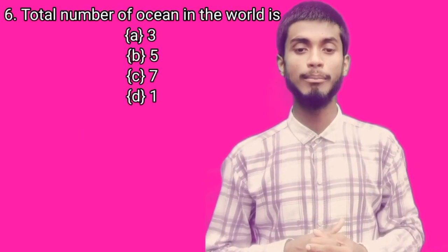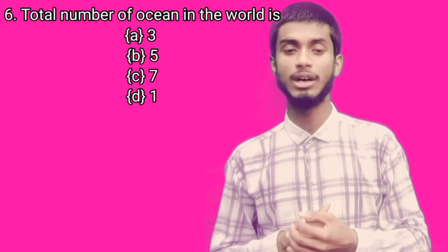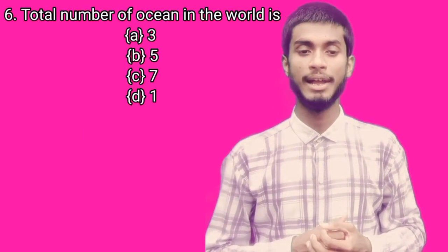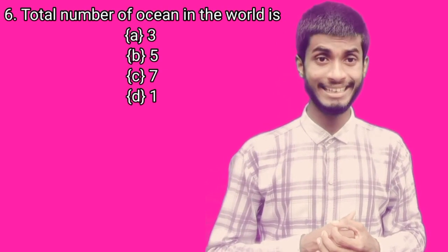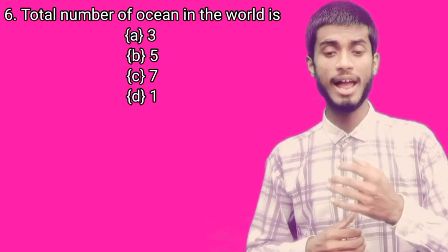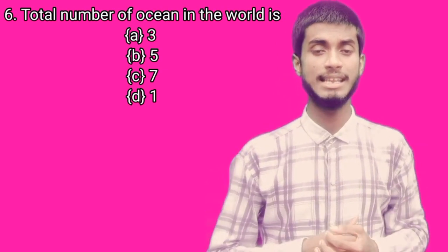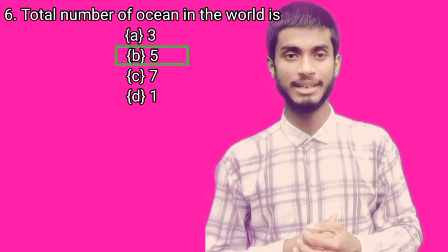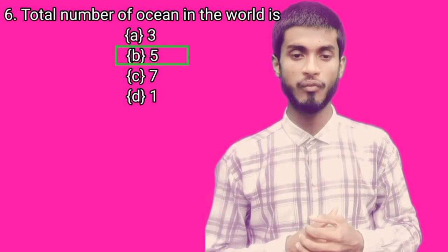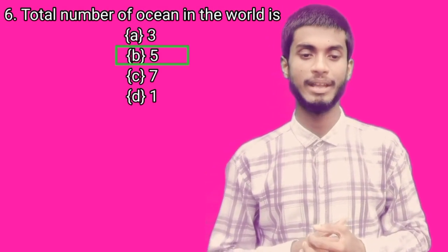Next question: what is the total number of oceans in the world? A) 3, B) 5, C) 7, D) 2. Your right answer is 5.